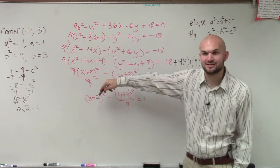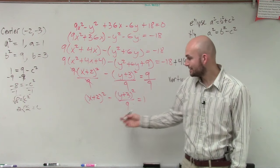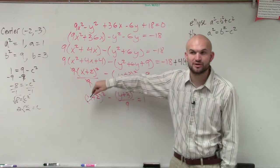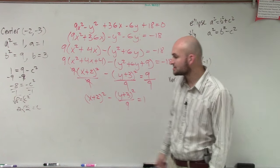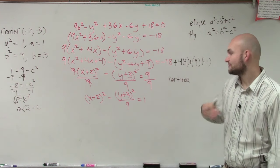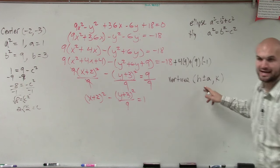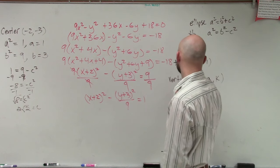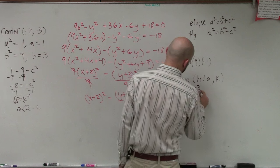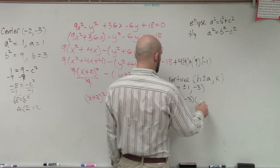For our vertices: since the a squared is under the x term, this is a horizontal hyperbola. The vertices are at h plus or minus a, comma k. So that's negative 2 plus or minus 1, comma negative 3. Therefore, my vertices are negative 3, negative 3 and negative 1, negative 3.